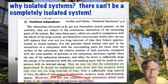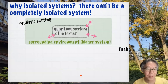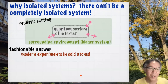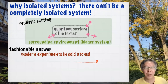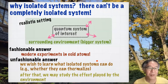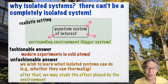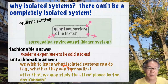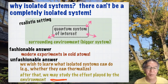So thermalization. This is contrary to what we believe — very interesting. But we have to answer this kind of question. There are two answers. One is the fashionable modern answer: we live in the 21st century, and there are many modern experiments in cold atoms, so they are almost isolated — so we do have motivation for considering isolated systems. The less fashionable answer is: we wish to learn what isolated systems can do, like whether they can thermalize or not. Probably Landau and Lifshitz believed that an isolated system can hardly thermalize. But now we believe — and we give an example — that an isolated system can thermalize. We should first learn all these things, and after that we may study the effect played by the environment.